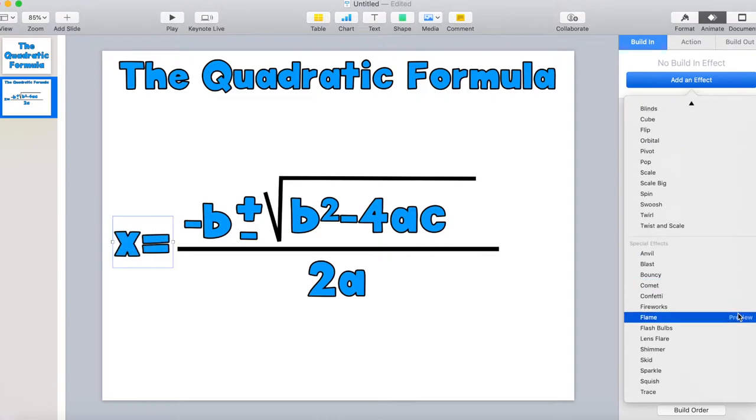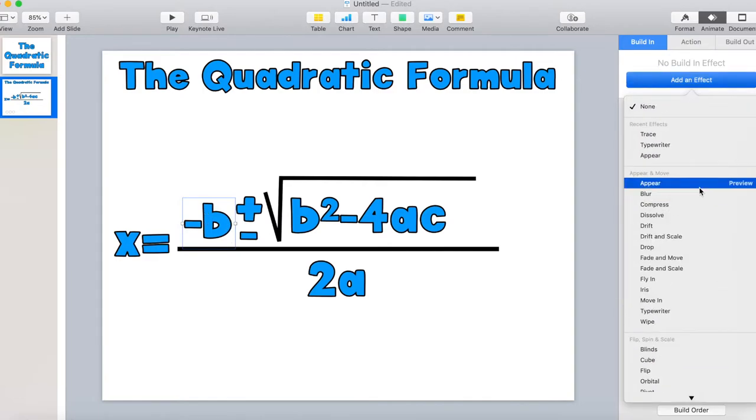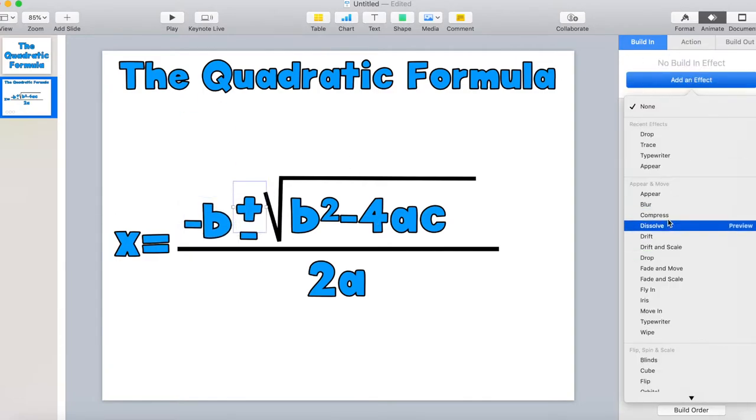Once you have all your text boxes on the screen, what you're going to do is click on each text box individually and animate them separately in the order that you want them to come up on the screen while you're giving your lecture.